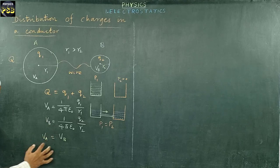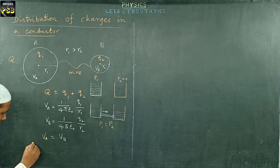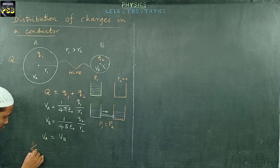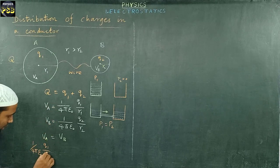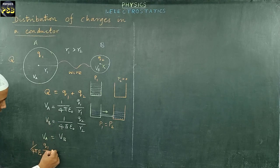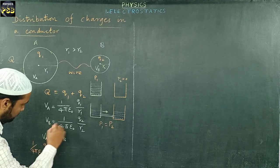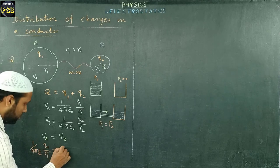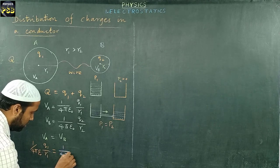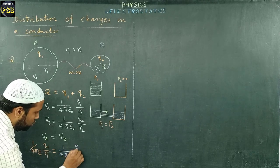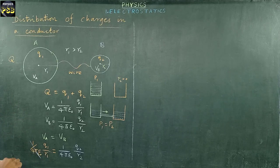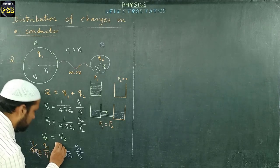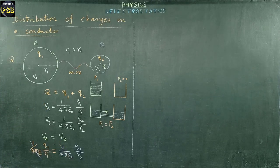Substituting the values of VA and VB into the equal-potential equation: 1/(4πε₀) × Q1/R1 = 1/(4πε₀) × Q2/R2. The 1/(4πε₀) term appears on both sides, so they cancel out, leaving Q1/R1 = Q2/R2.